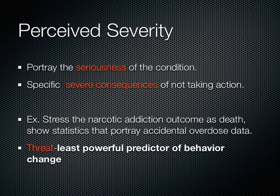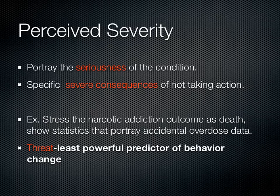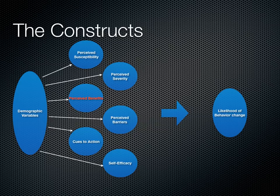Using the same narcotic drug example: stress the addiction outcome as death and show statistics portraying accidental overdose data. By showing accidental overdose data you demonstrate that people who died from narcotic addiction did not intend to commit suicide — they were going about their daily lives and it ended in death. This shows it can hit anybody at any time. Notably, perceived susceptibility and severity are actually the least powerful predictors of behavior change.